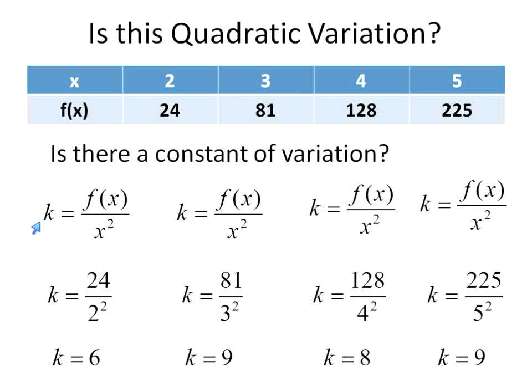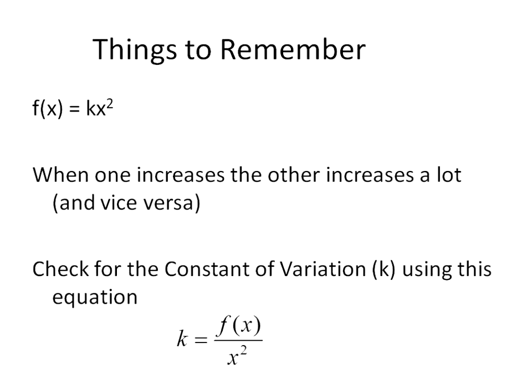And then we just need to check the constant using this equation. So a couple of things. First off, our original equation, the function at x is equal to our constant times x squared. When one increases, the other increases a lot and vice versa. You check for a constant of variation using this equation here. And this equation is just this equation transformed. We're dividing both sides by x squared. And that's just about everything to remember with quadratic variation.